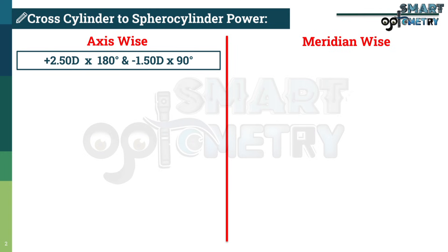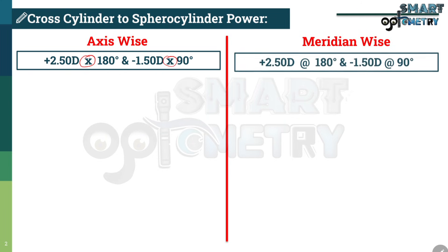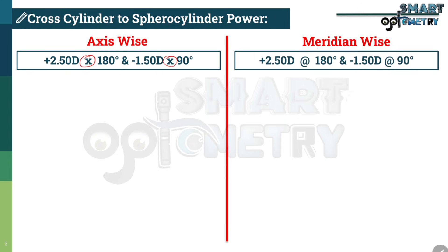To represent that we are writing this power in axis-wise, we use a cross symbol. The example of meridian-wise power is plus 2.5 at 180 degree meridian and minus 1.5 at 90 degree meridian. To represent that the power is written meridian-wise, we use the at-the-rate symbol.